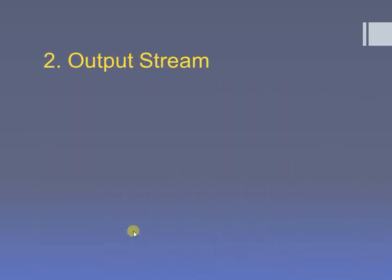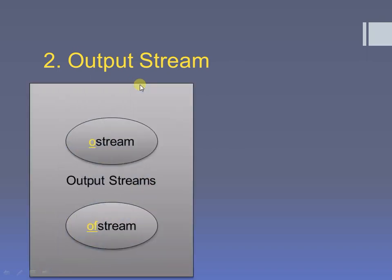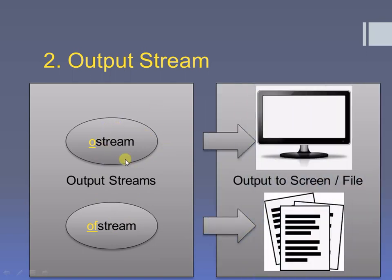This slide explains the output stream. ostream and ofstream are the two output streams. ostream is responsible to give the output to the screen, and ofstream is responsible to write the output onto the file.